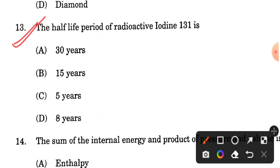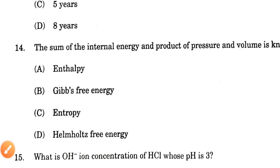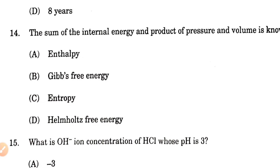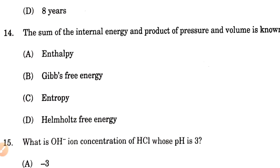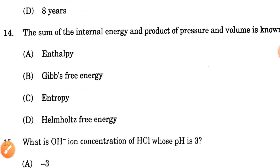Question number 14: The sum of internal energy and the product of pressure and volume is known as what? Internal energy plus pressure times volume — that is your enthalpy in a thermodynamic system. So the answer for question 14 will be option C — when we add internal energy with the product of pressure and volume, that gives us enthalpy.